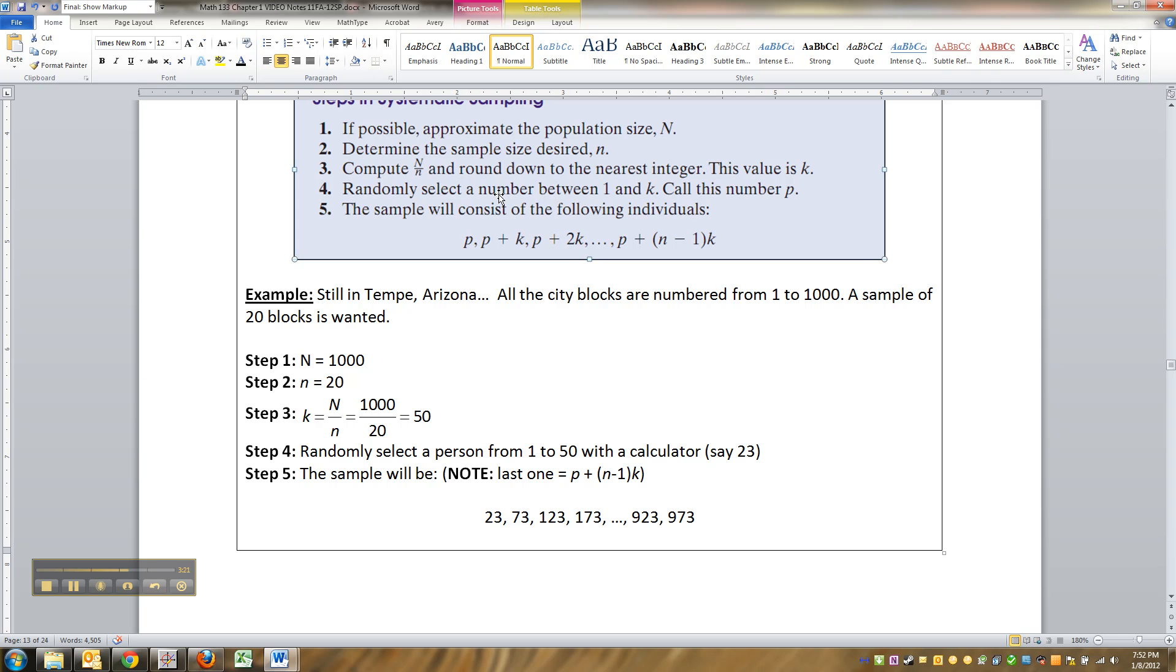And then you randomly select a number between one and K, you call this number P. So, we randomly select, say, number twenty-three. Number twenty-three, you're the first one.